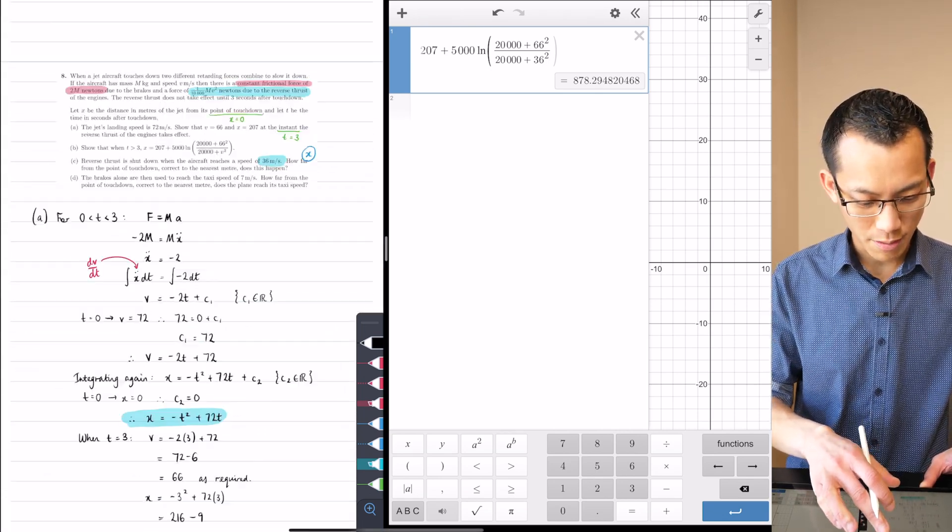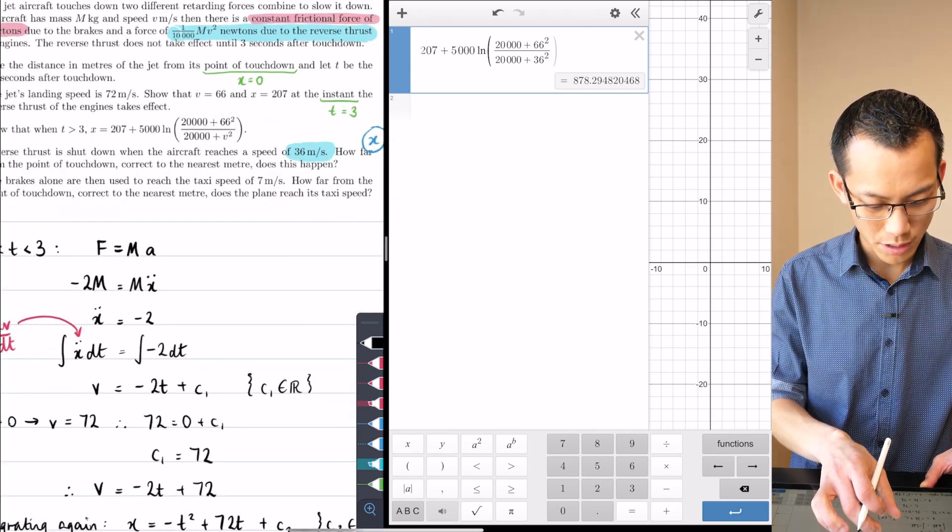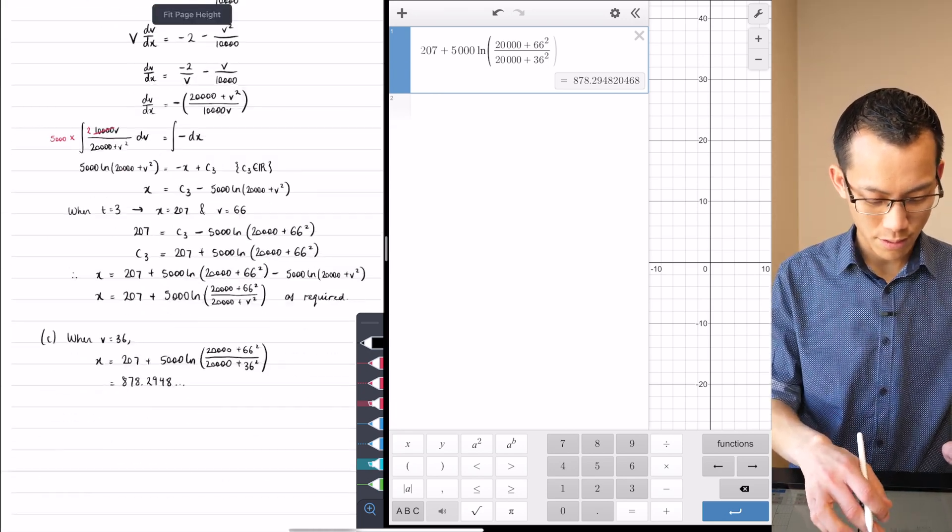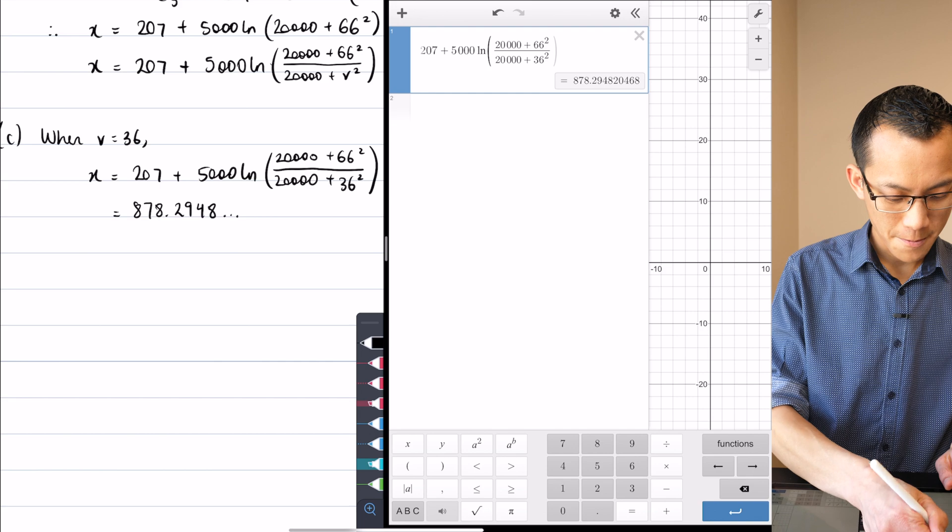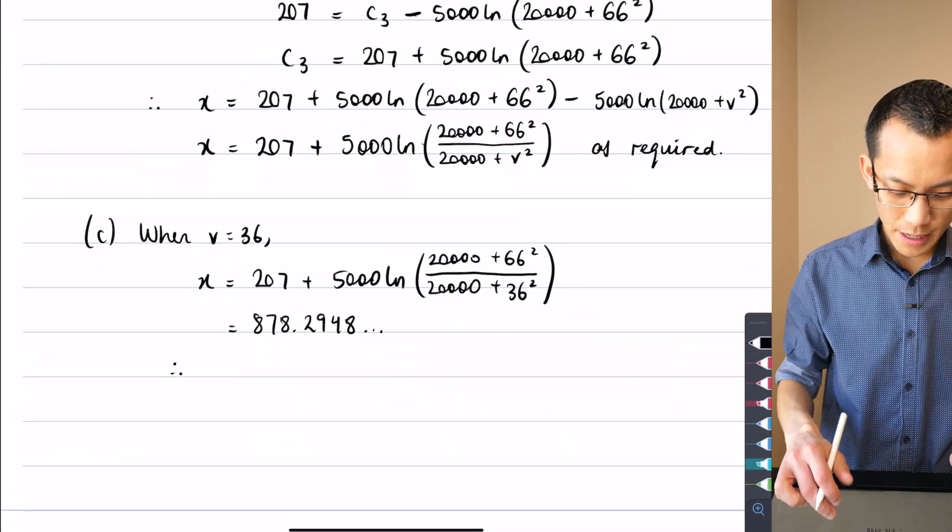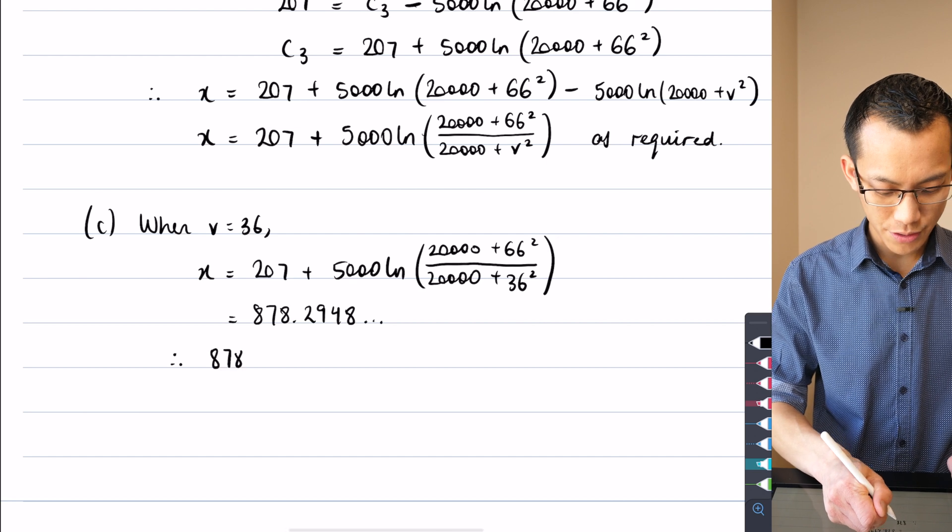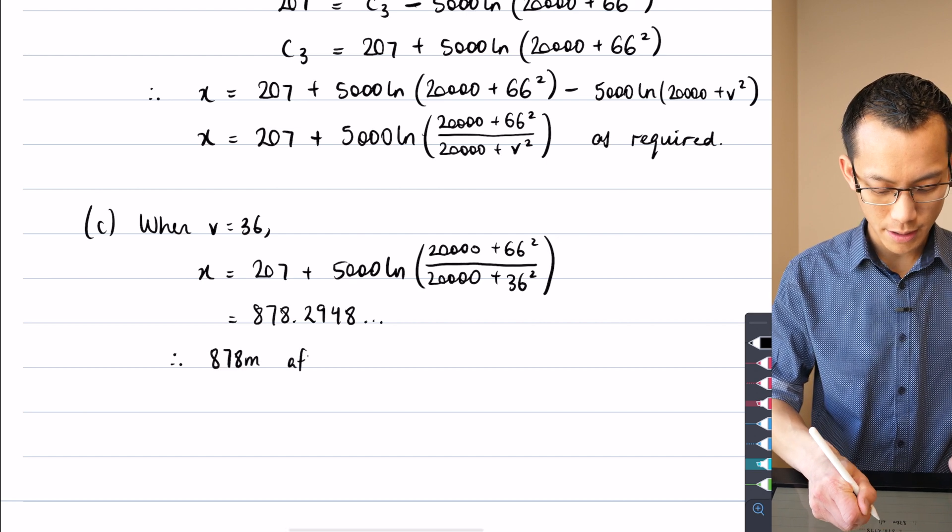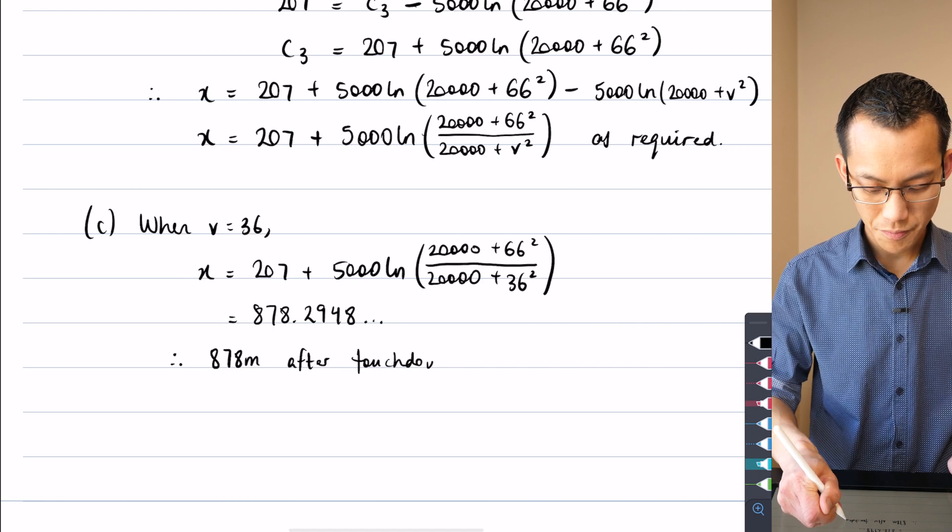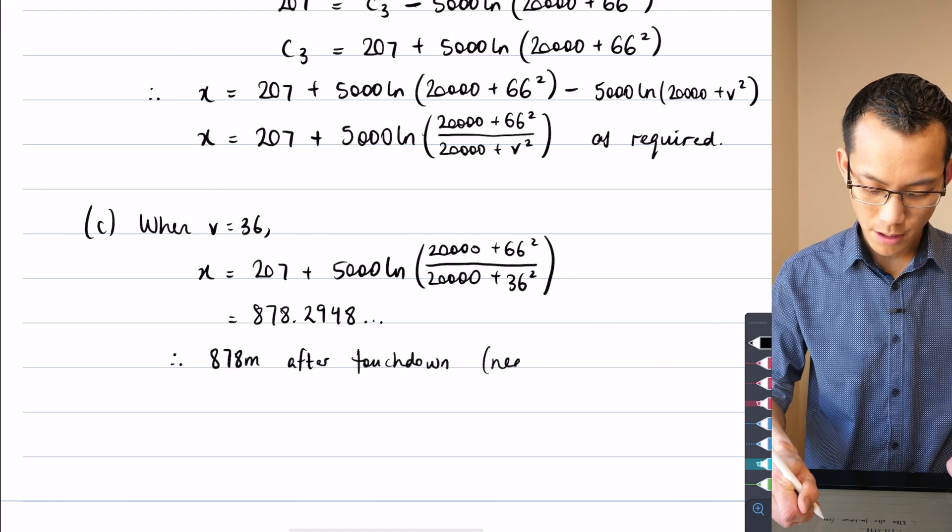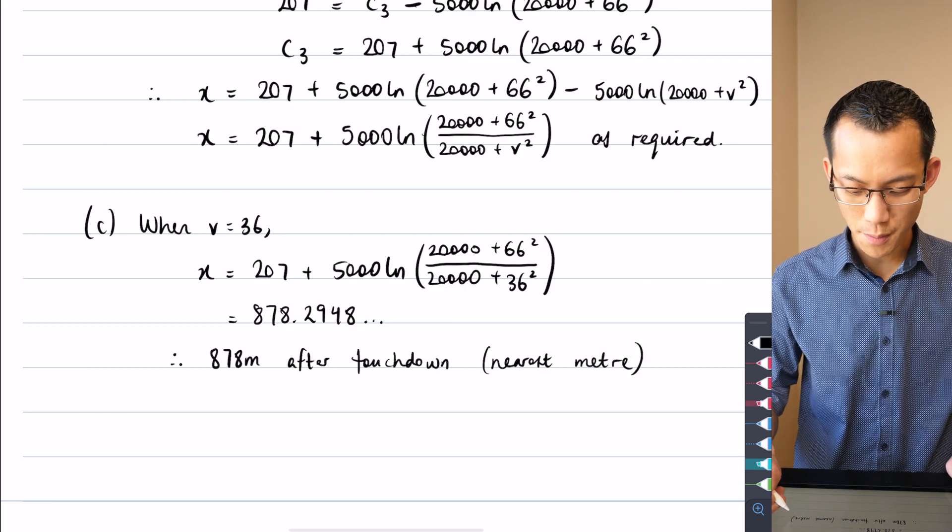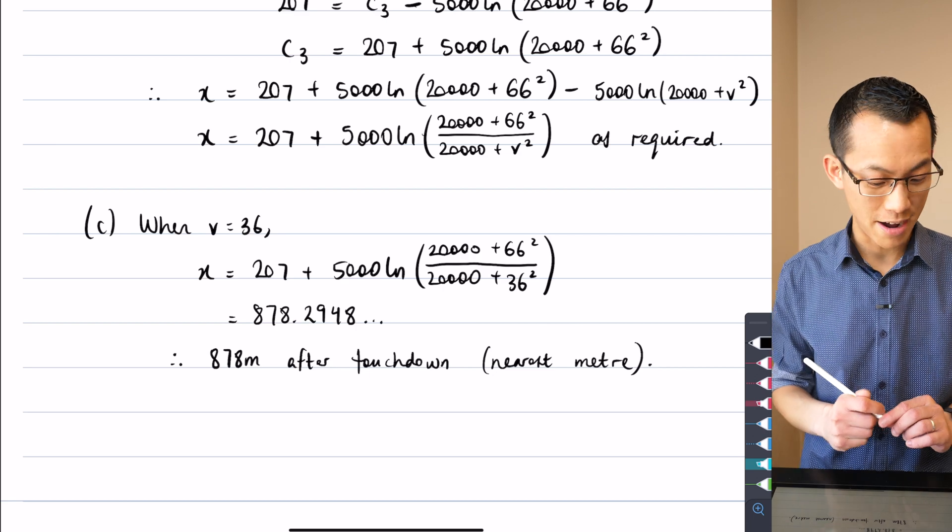So I'm reading my decimal places as 878.2948 dot dot dot. If I go back to the question, I'm pretty sure what accuracy do they want? They want correct to the nearest meter. So therefore, down here, I'm just going to say, therefore, it's going to be rounding down 878 meters after touchdown. That's to the nearest meter. Okay, so happy times, just a straightforward use of the model that I got in part B.